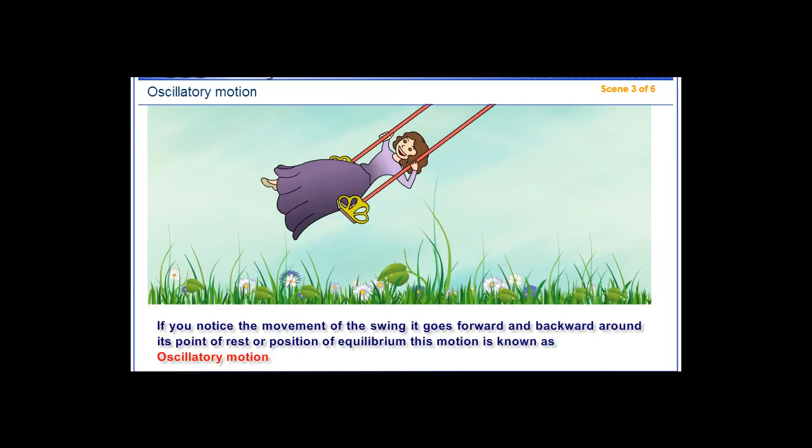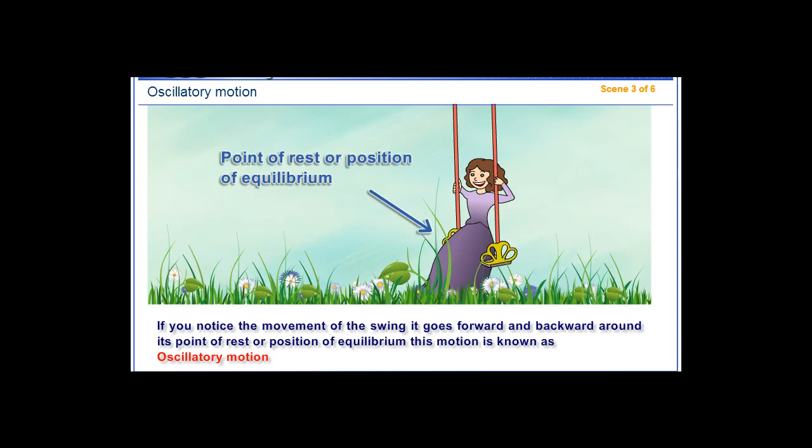If you notice the movement of the swing, it goes forward and backward around its point of rest or position of equilibrium. This motion is known as oscillatory motion.